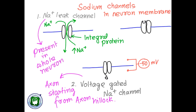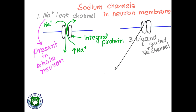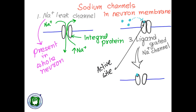The third category of sodium channel is the ligand-gated sodium channel. These channels are present in dendrites and cell body and play an important role in synaptic transmission. The channel protein contains an active site for binding of a chemical substance. Due to the binding of specific chemicals to the active site, it induces changes in the three-dimensional configuration of the protein and the channel opens, allowing free movement of sodium across it.